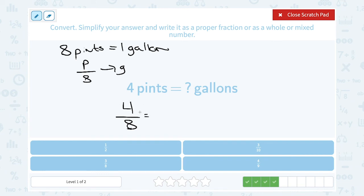I can reduce this fraction because 4 goes into 4 and 8. Four goes into 4 one time, and 4 goes into 8 two times. So 4 pints is half of a gallon.